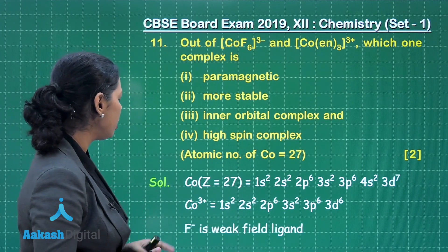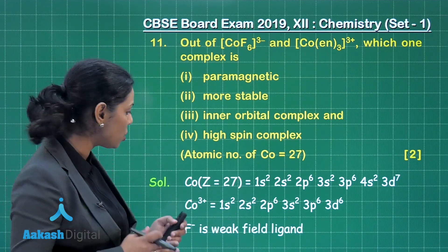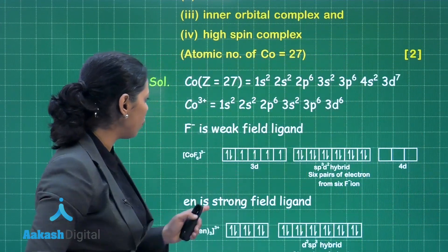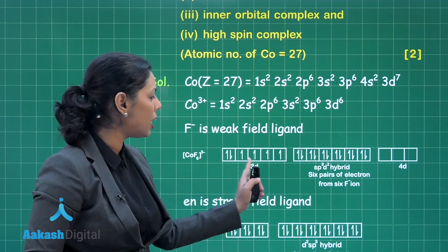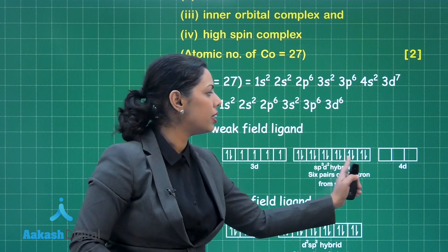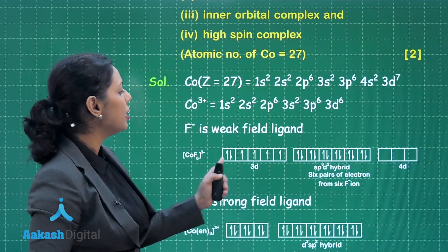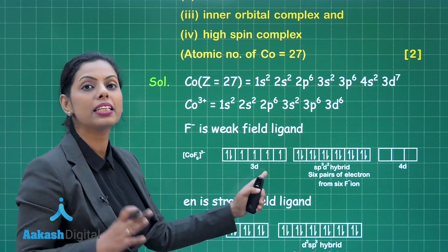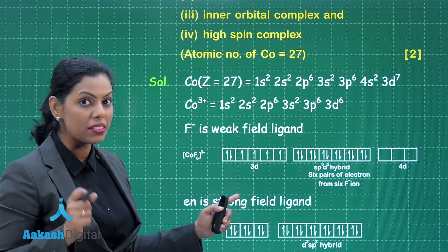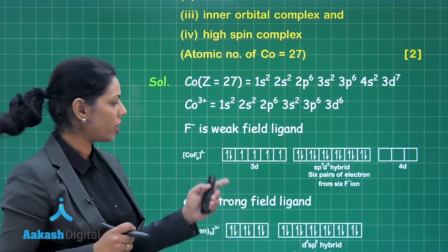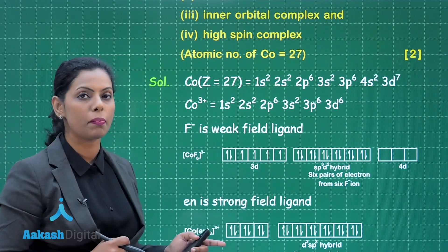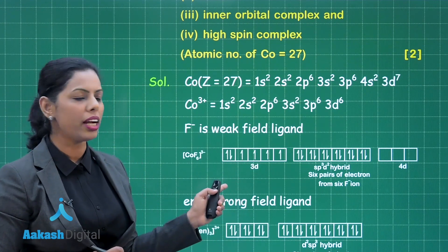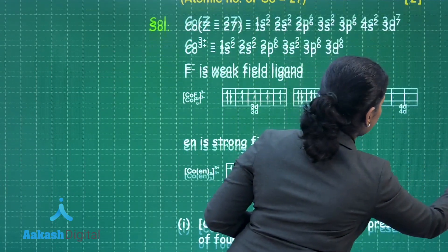Fluoride is a weak field ligand, so it will not cause pairing of electrons in the 3d orbital. The filling of electrons remains unpaired, giving an sp³d² hybridization. That is why this complex is an outer orbital complex. It is also a paramagnetic complex because 4 unpaired electrons are present, making it high spin.